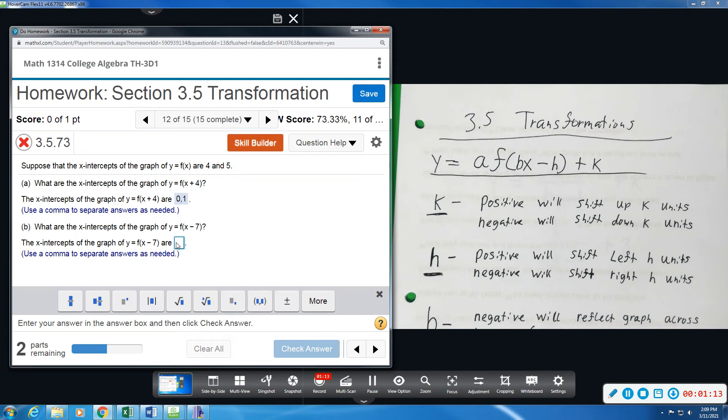So 4 plus 7 will give us 11, and 5 plus 7 will give us 12. So in effect, it will shift our intercepts right.